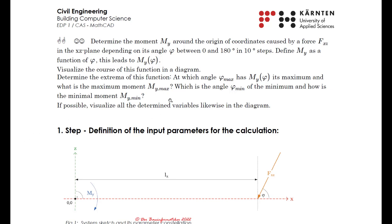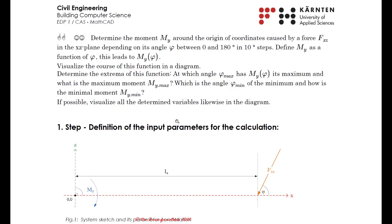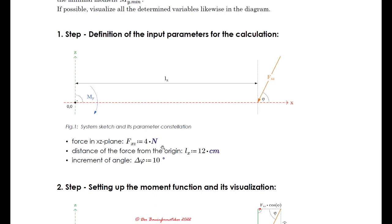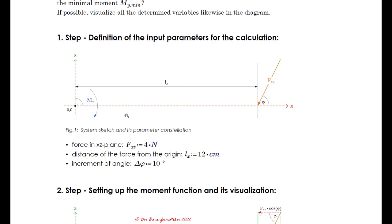You see here the already printed result in a PDF file. We have an example from CV Engineering — you can also take it as a Mechanical Engineering example. It's quite simple: we have a plan with a force inclined to the x-axis with angle phi. This force causes a moment at the origin, and we would like to visualize the relationship between the inclination angle phi and the moment. We have some parameters.